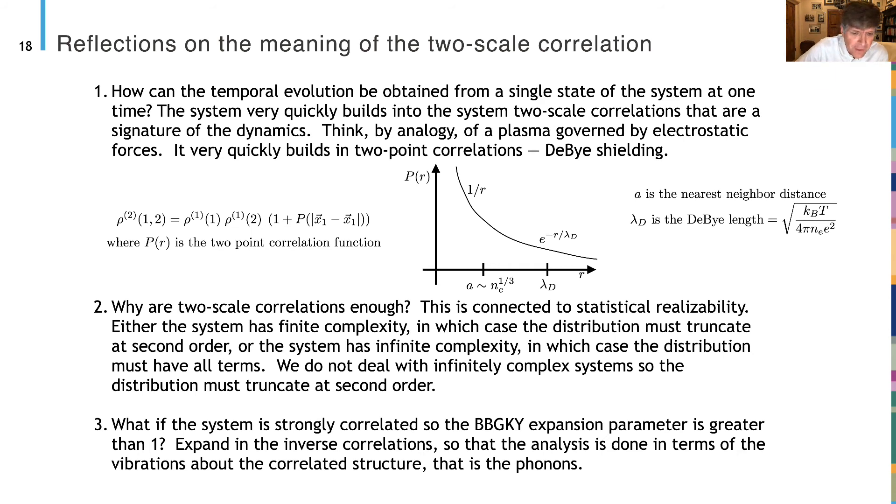Here are several reflections on the meaning of this two-scale correlation that we're looking at. I'm not going to go over the last two, but the first one is really quite interesting. You can ask yourself, how can the temporal evolution, these K's, be obtained from a single state of the system at one time? The answer is that this system very quickly builds up two-scale correlations that are signatures of dynamics. Think by analogy of a plasma governed by electrostatic forces. It very quickly builds up two-point correlations by shielding, and these correlations, if you look at them, will effectively tell you what the physics is.